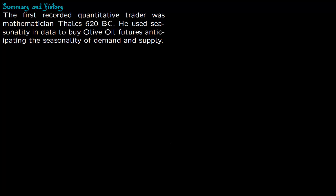Now we talk about summary and history of univariate time series. The first recorded quantitative trader was mathematician Thales in 620 BC. He used seasonality in data to buy oil futures, anticipating the seasonality of demand and supply.